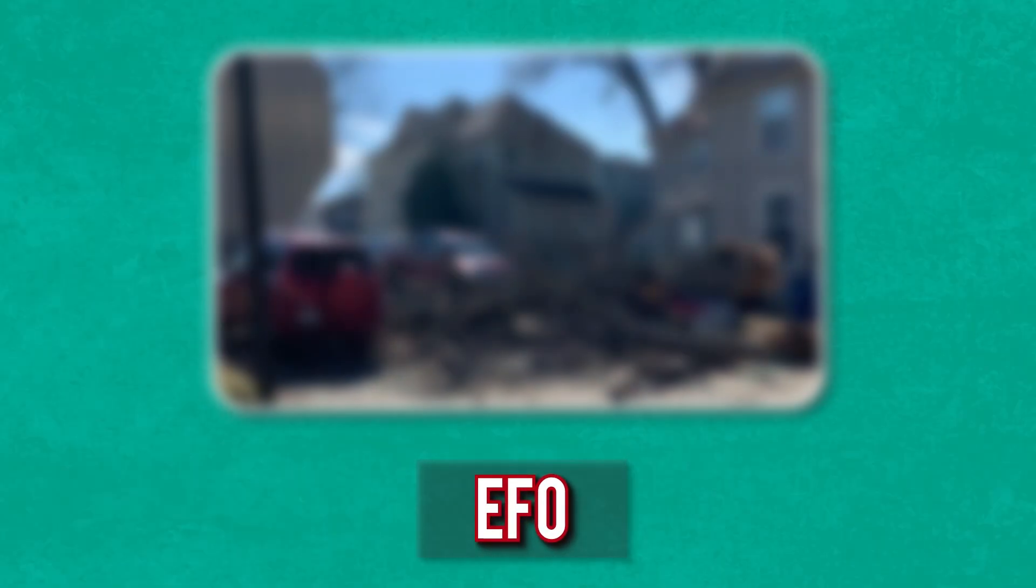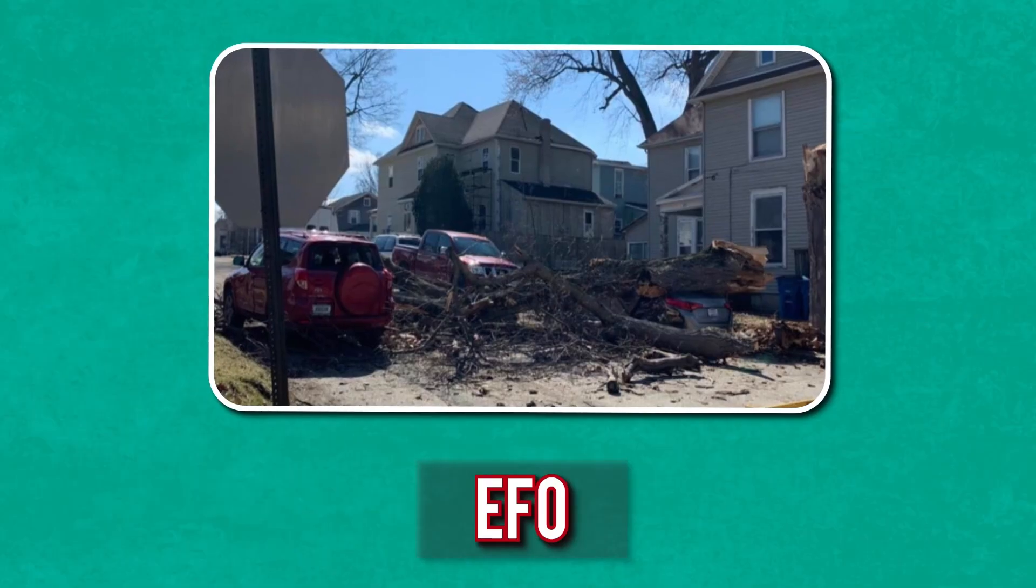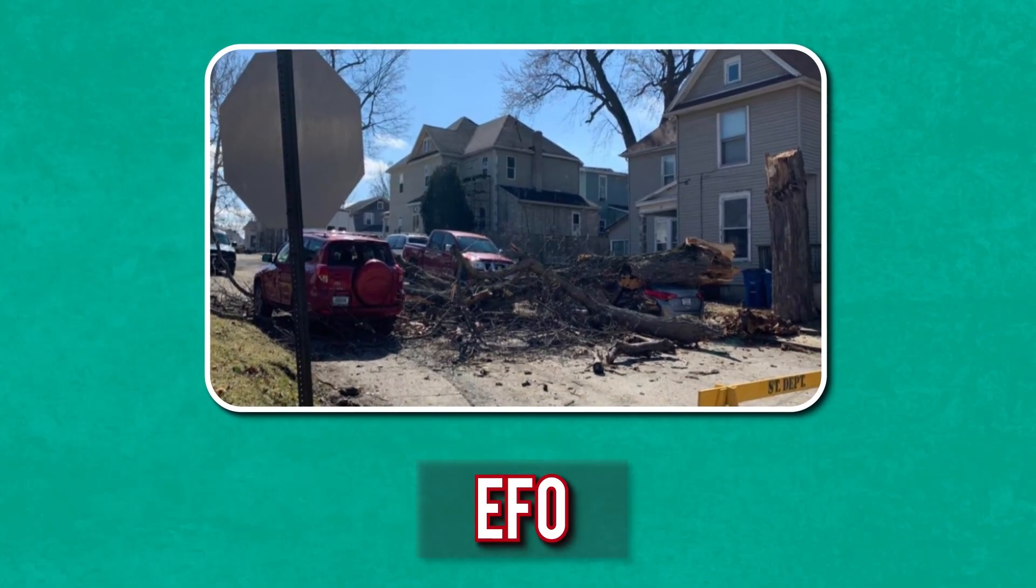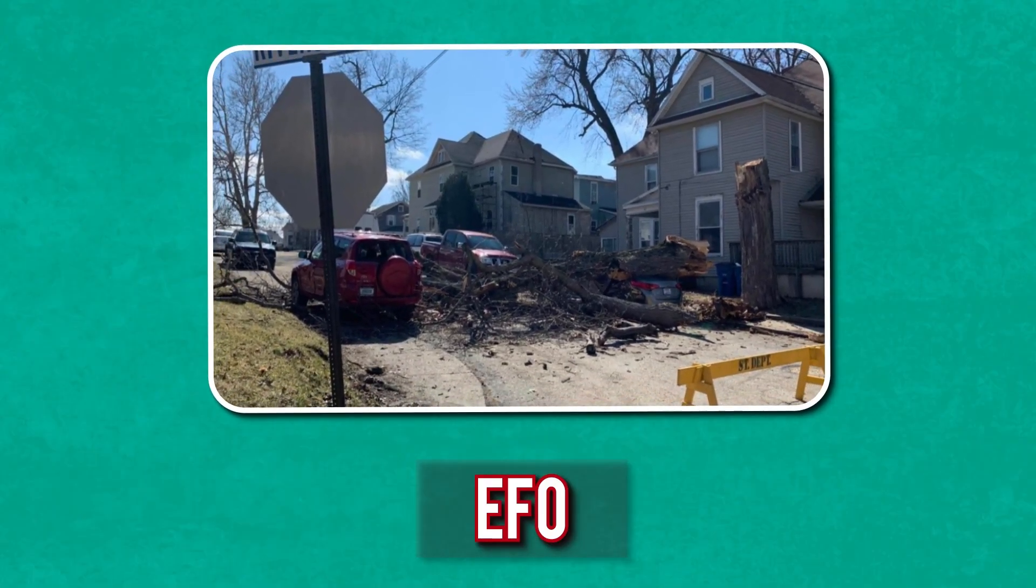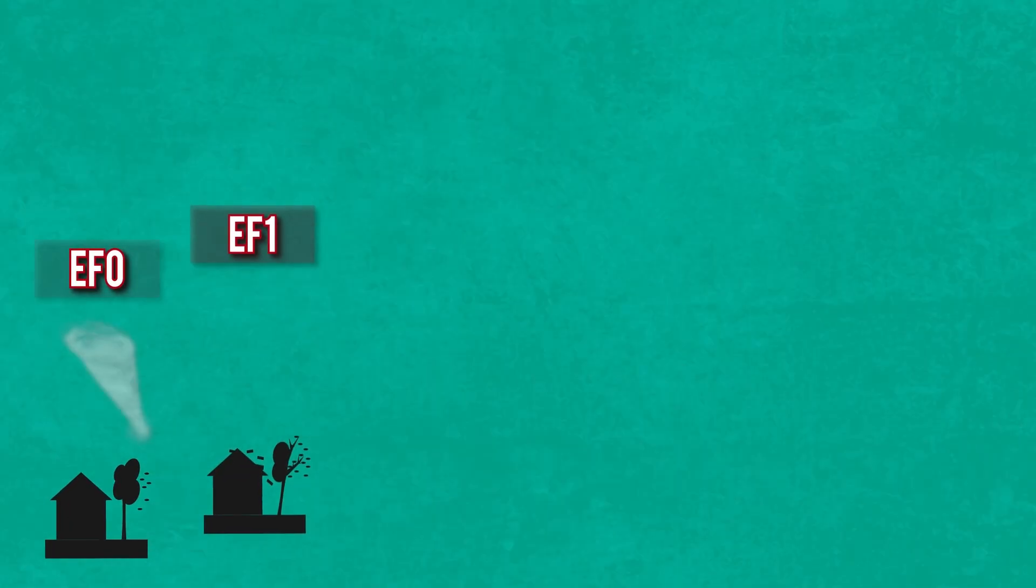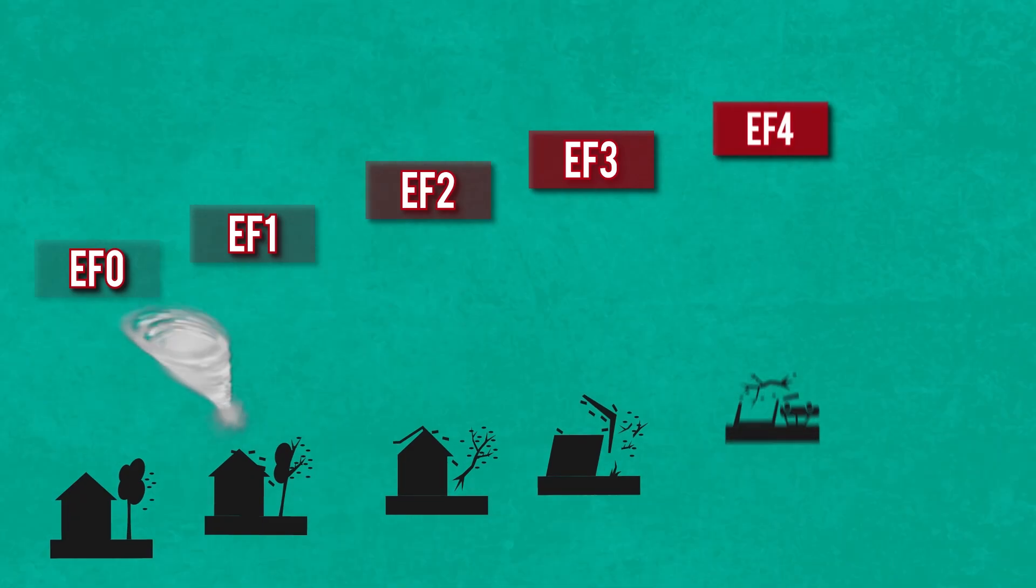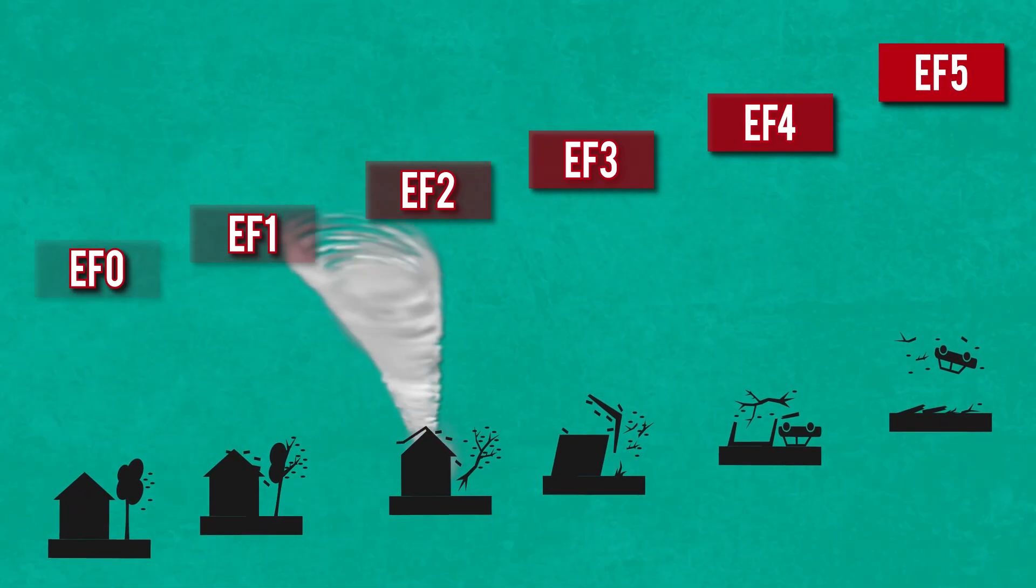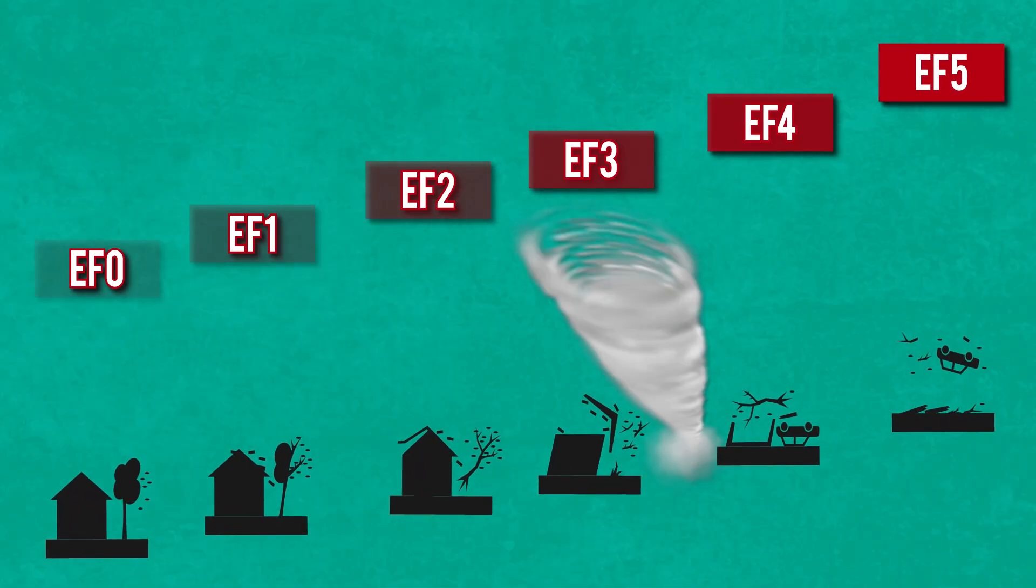An F0 rated tornado will cause relatively minor damage, such as ripping branches from trees or bending road signs. There's no serious potential harm for people at this level. As the tornado levels of intensity increase, as you would imagine, so does the potential damage. It doesn't take long for the danger factor to skyrocket.